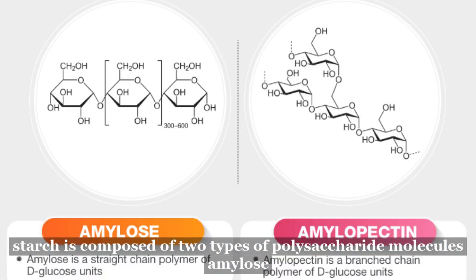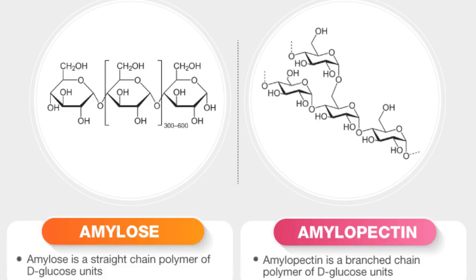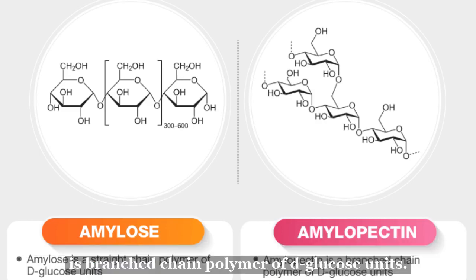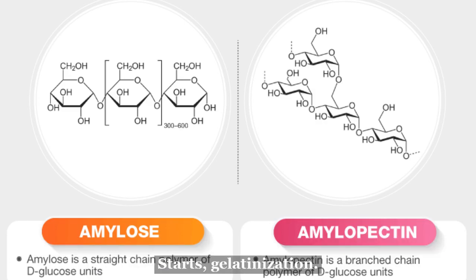Starch is composed of two types of polysaccharide molecules: amylose and amylopectin. Amylose is a straight-chain polymer of D-glucose units, and amylopectin is a branched-chain polymer of D-glucose units.